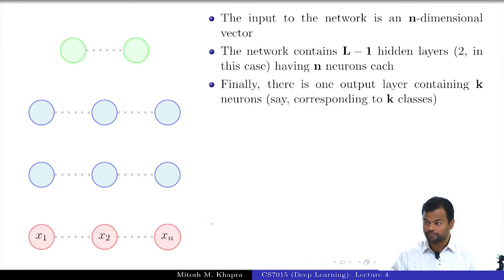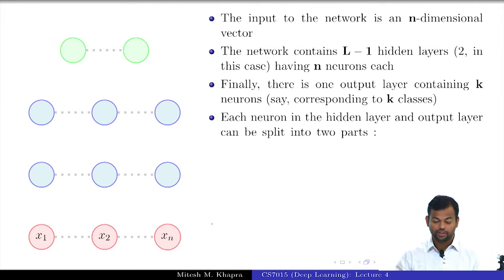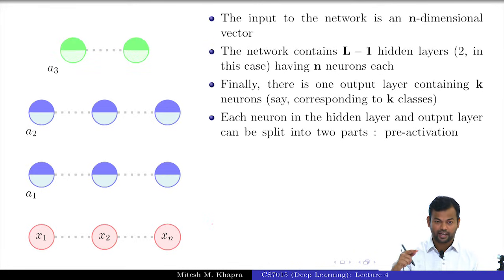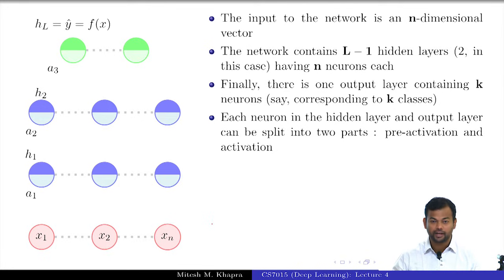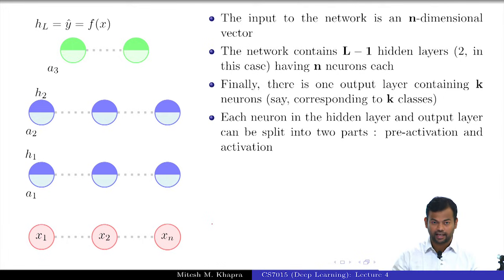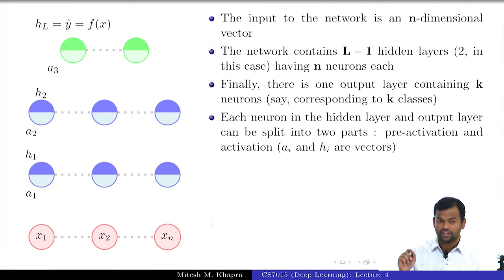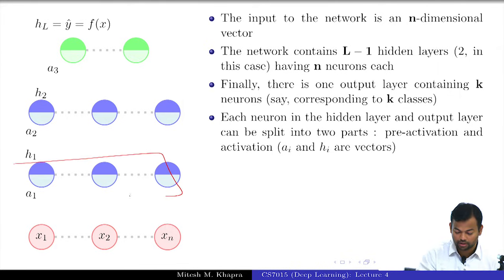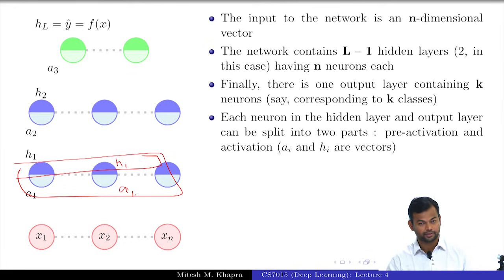What is missing? The weights. Each neuron in the hidden layer and the output layer can be split into two parts: the pre-activation and the activation. The pre-activation performs aggregation and the activation introduces non-linearity. A_i and H_i are vectors — this entire part is H_1 and this part is A_1, both of these are vectors.